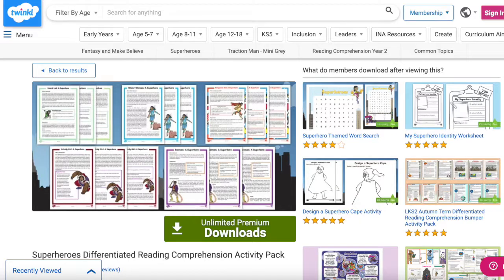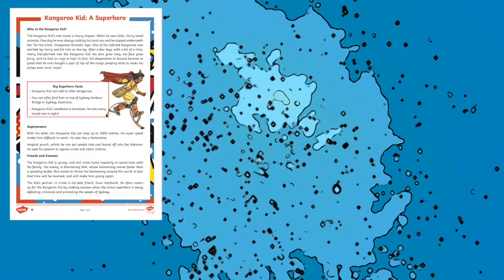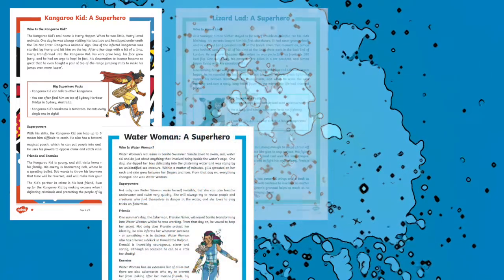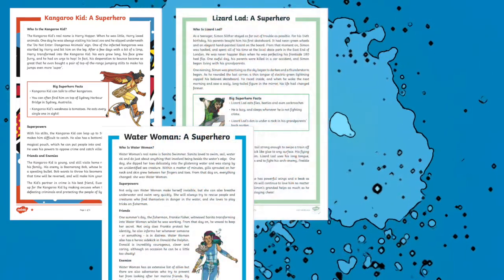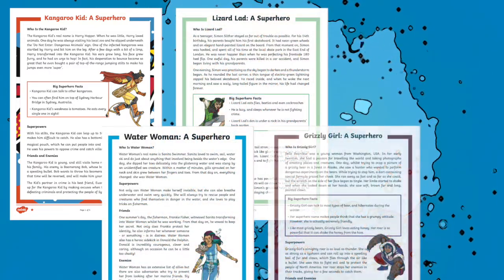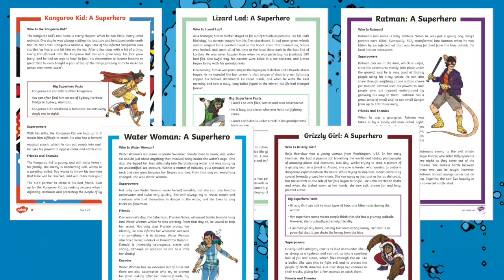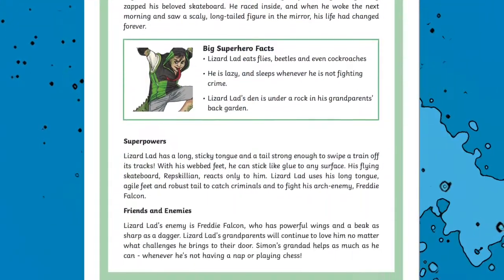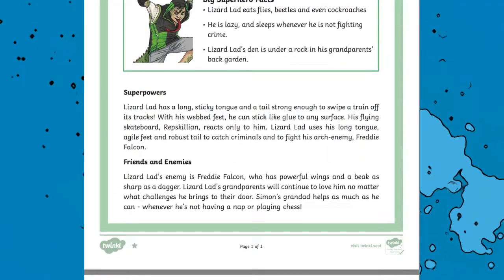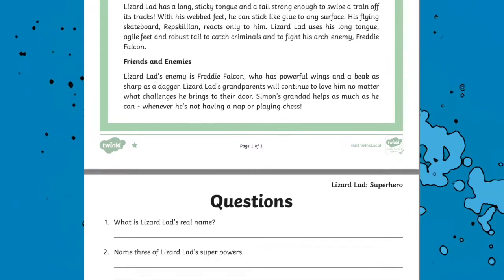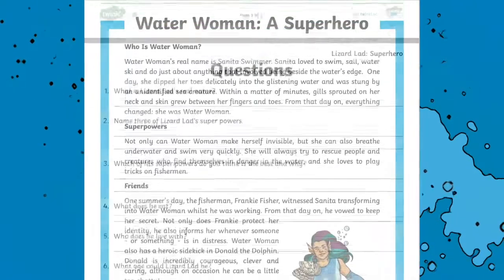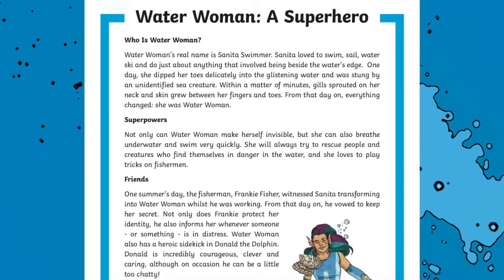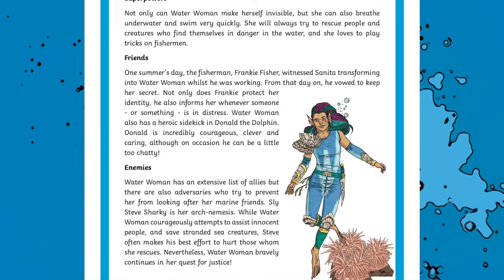Finally, let's take a look at the Superheroes Differentiated Reading Comprehension Pack. A super reading pack for your children to practise their inference skills and learn about each of the fun Twinkl superheroes. Each comprehension has a choice of three differentiated fact files and question sheets. There's also an answer sheet included — the perfect resource for cross-curriculum learning.